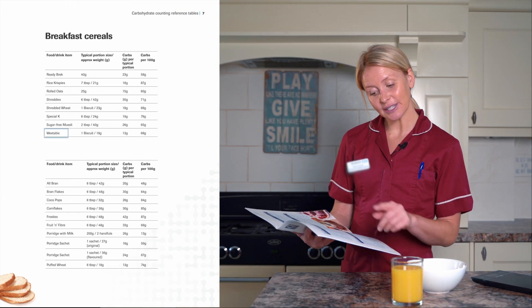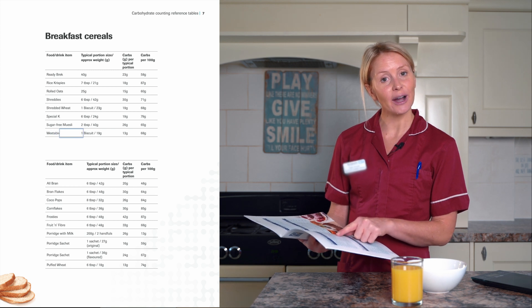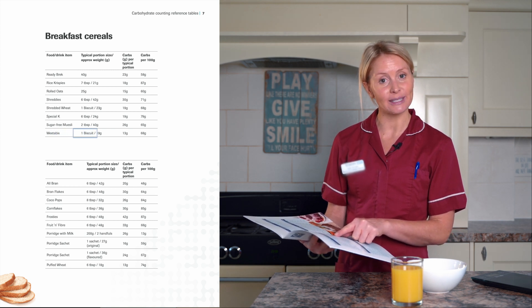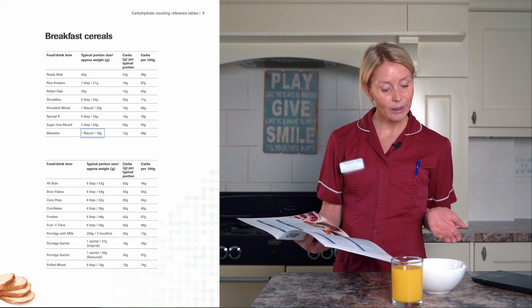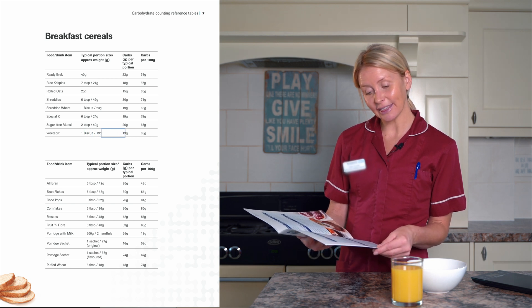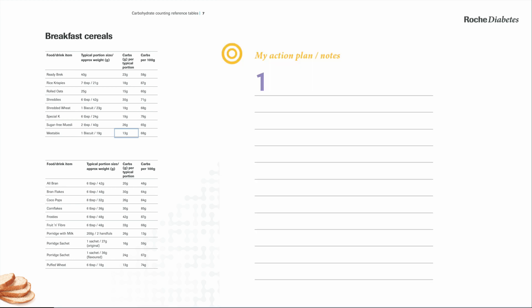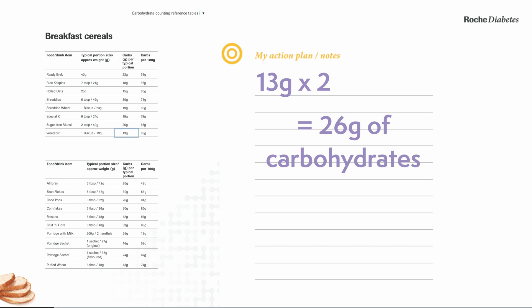As you can see, Weetabix is listed here and the carbohydrates have been calculated per biscuit. Now we have two biscuits in our bowl. Per biscuit there are 13g of carbohydrates, so if we times that by 2 that calculates 26g of carbohydrates in our serving of Weetabix.